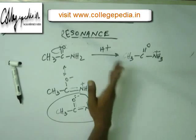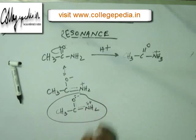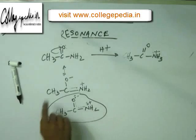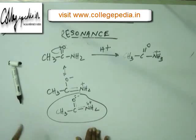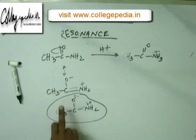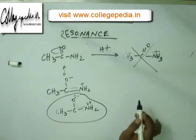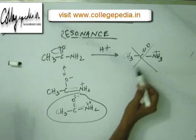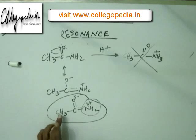If someone asks where H+ will go, draw the resonating structures, draw the hybrid, look in the hybrid where you have an electron-rich end and where you have an electron-deficient end — and you will get your answer. We have drawn the hybrid and we can see very clearly that oxygen is the electron-rich end. So obviously H+ will go to oxygen, not to nitrogen. What we drew on the basis of electronegativity was wrong — actually nitrogen is electron-deficient as we can see in the hybrid structure. So H+ will go to oxygen.